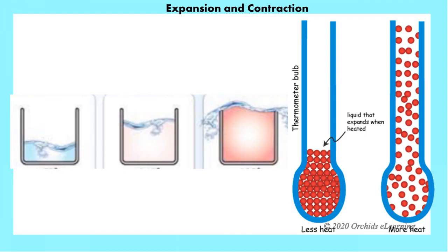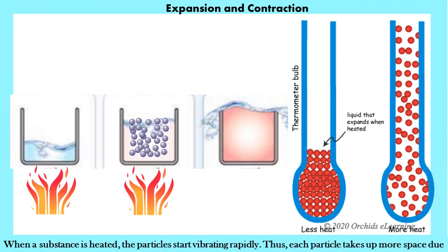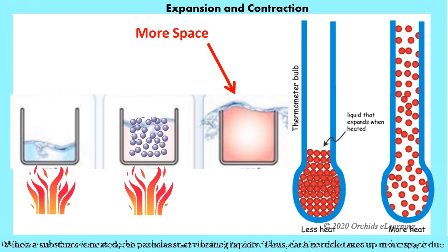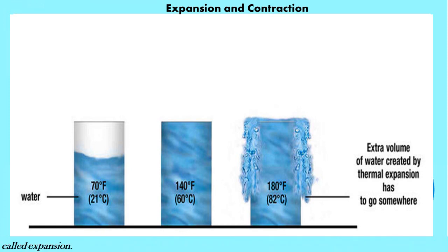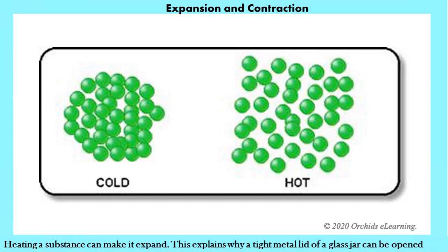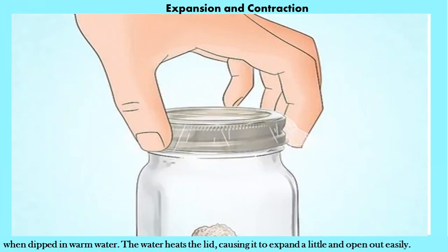Expansion and contraction: when a substance is heated, the particles start vibrating rapidly, and each particle takes up more space due to its increased movement, so the substance expands. The increase in the size of matter on heating is called expansion. For example, a tight metal lid of a glass jar can be opened when dipped in warm water — the water heats the lid, causing it to expand a little and open out easily.